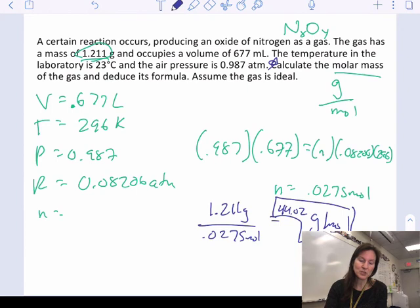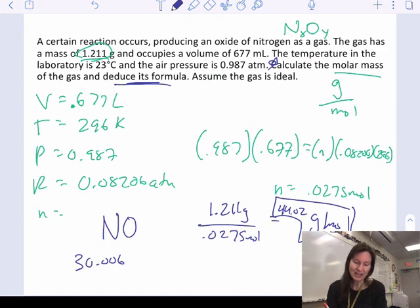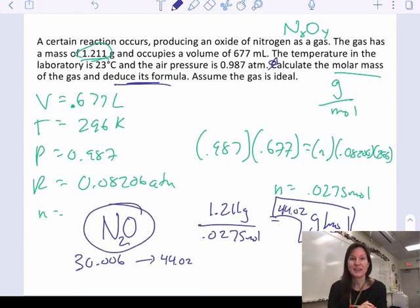The second thing I'm supposed to do is figure out the formula. To figure out the formula I know it has to have at least one N and one O. So one N plus one O is about 30.006. Looking at that compared to what I solved for which is 44.02, I can see the difference between those is about 14 and one N is going to be 14. So if I had two N's and one O that would get me to my final calculated molar mass of 44.